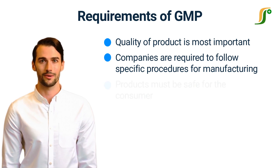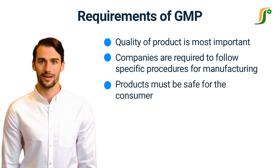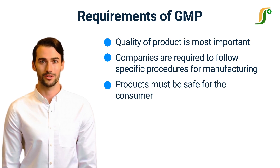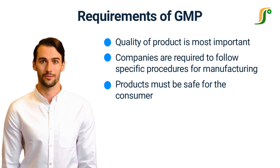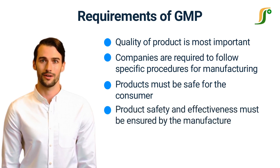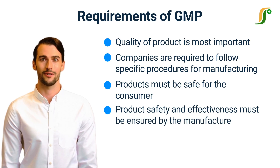Safety is another important part of GMP. Products manufactured in the facility must be safe for the consumers. The product must be tested for potential hazards before the product is released for distribution. If the product is unsafe, then the manufacturer must take steps to resolve the issue. The product must be effective and safe for the patients, and must comply with the standard specification. Product safety and effectiveness must be ensured by the manufacturer before distribution.